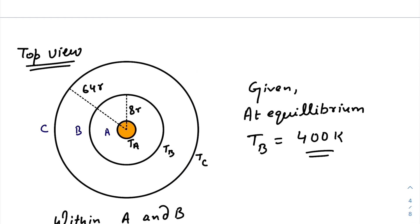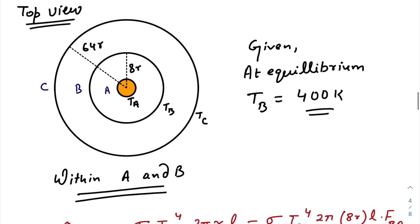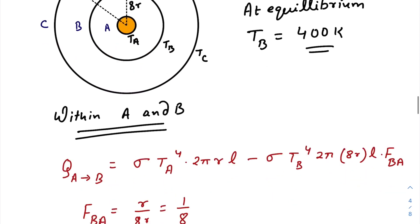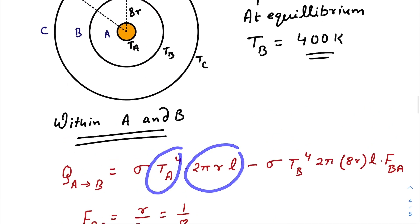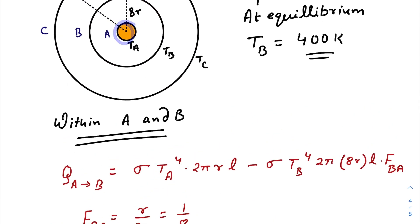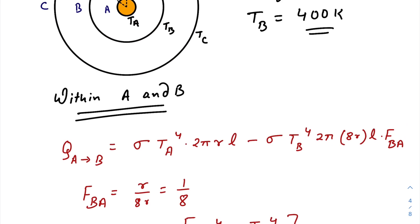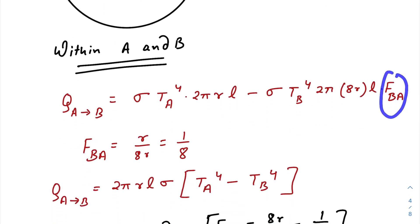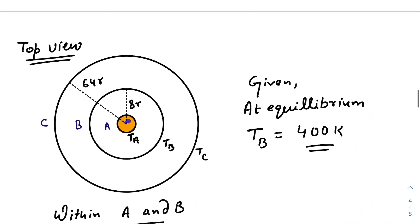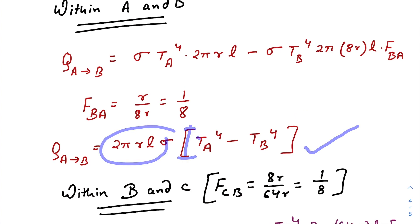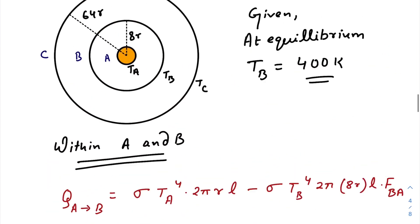That's what equilibrium signifies. Between A and B, the energy per unit time is σTₐ⁴ · 2πrL (cross-surface area of cylinder A) minus σT_B⁴ · 2π·8rL times the view factor. The view factor here is the inner radius divided by the outer radius, which is r/(8r) = 1/8. Plugging this in, we get 2πrLσ(Tₐ⁴ − T_B⁴) as the energy per unit time between cylinders A and B.